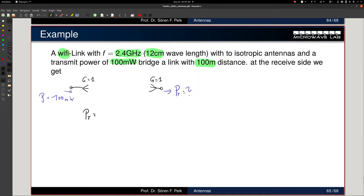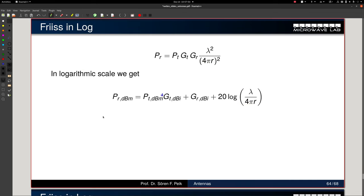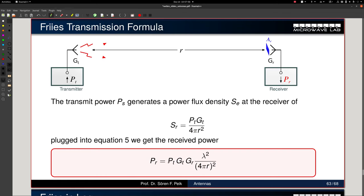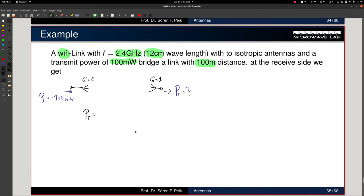P received is P transmit. We go back here, P transmit, G transmit, G receive, and so on. P transmit, or let's write down the formula once. P transmit, G transmit, G received, over lambda, times lambda over 4 pi r squared.